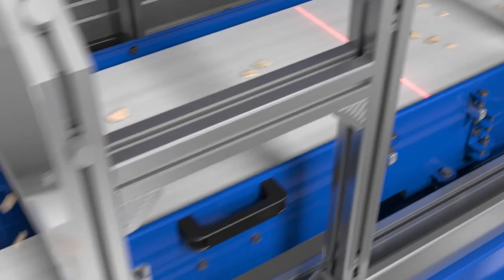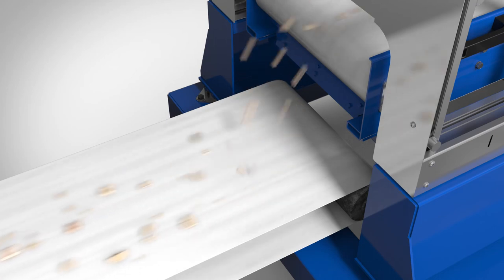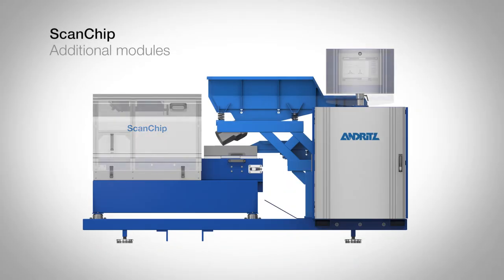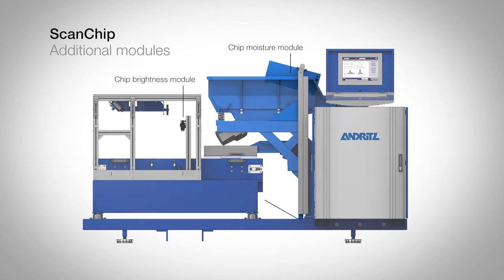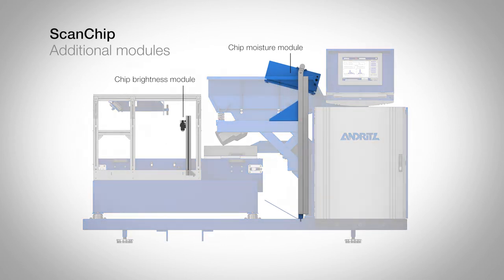After the analysis, the return conveyor transports the chips back to the chip flow. Additional measurement modules can easily be added to ScanChip for monitoring chip moisture and chip brightness. The modules are fully integrated into the ScanChip system to measure each sample.